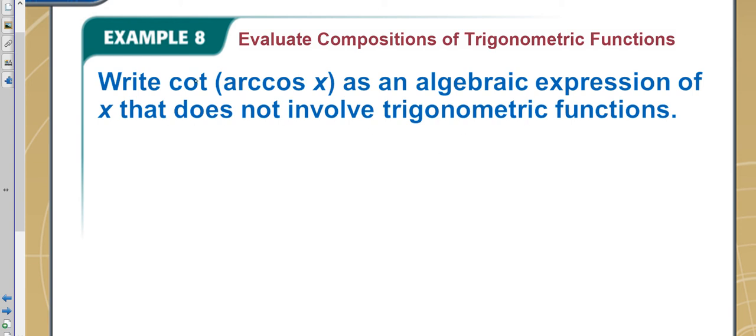So let's figure this out. I can't cancel these because cotangent is not the opposite or the inverse of cosine inverse. They're not the same.